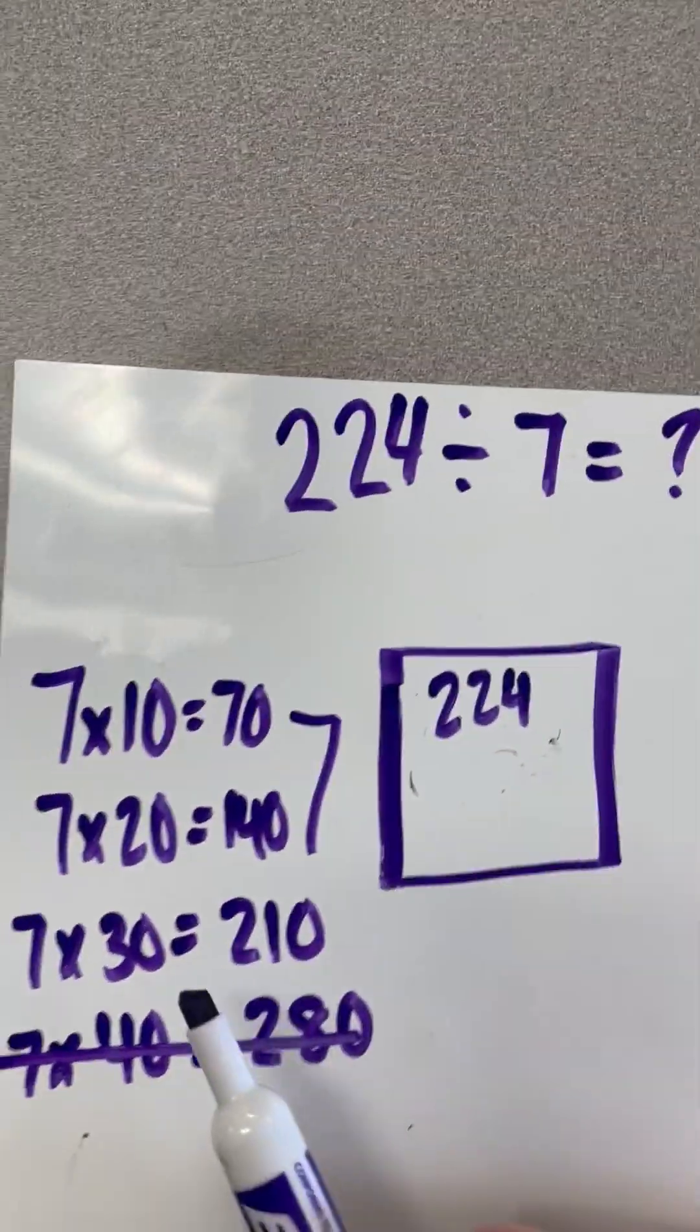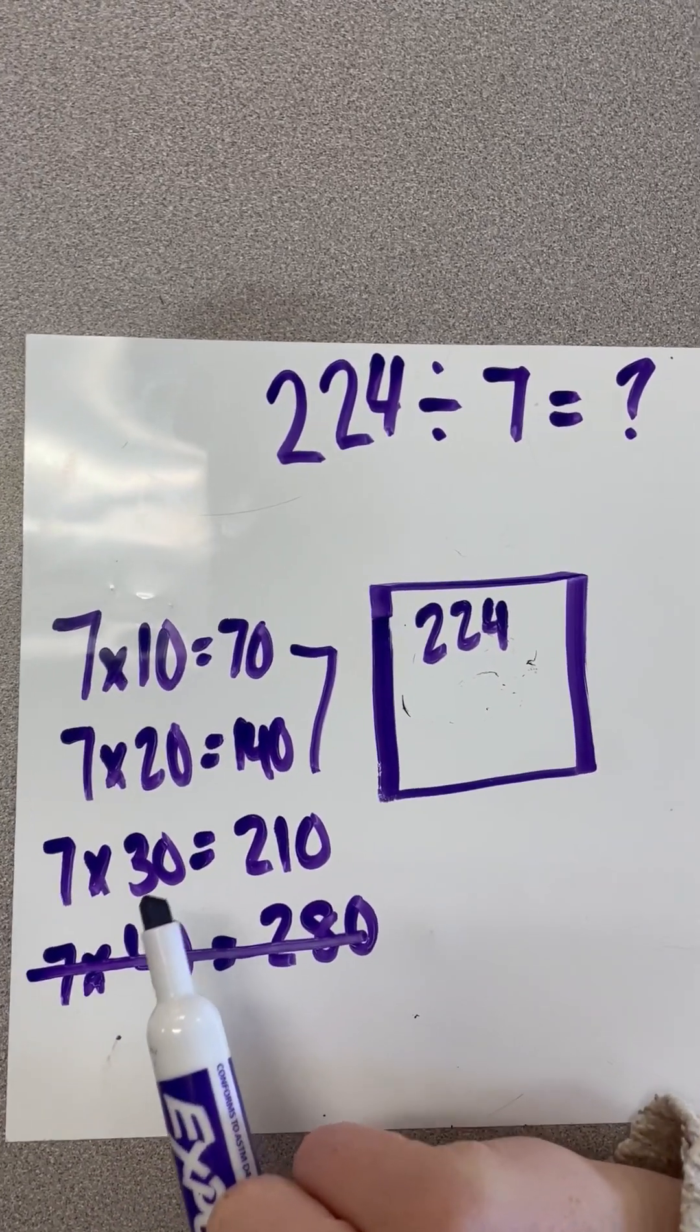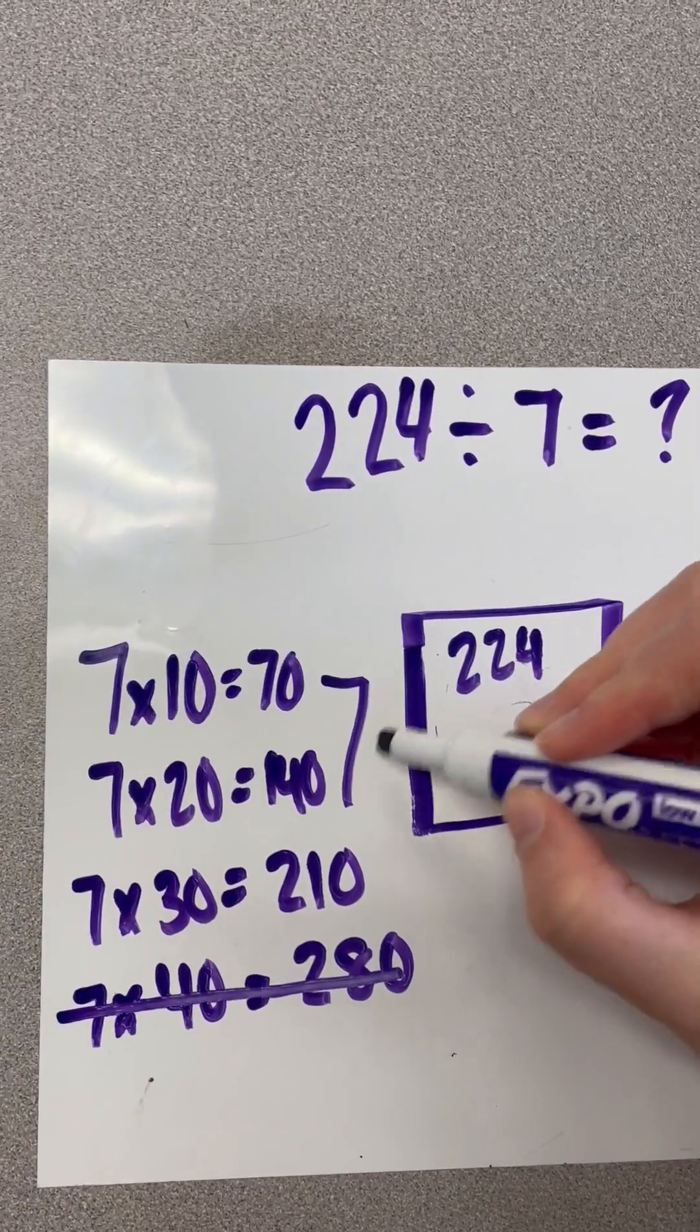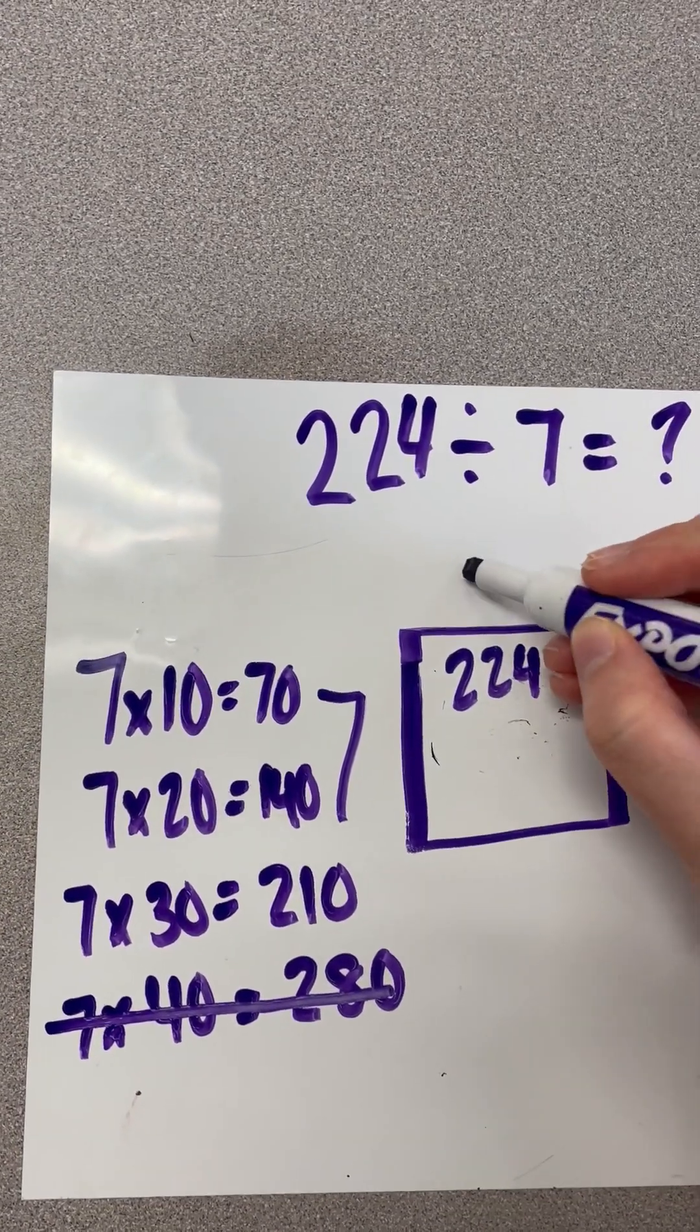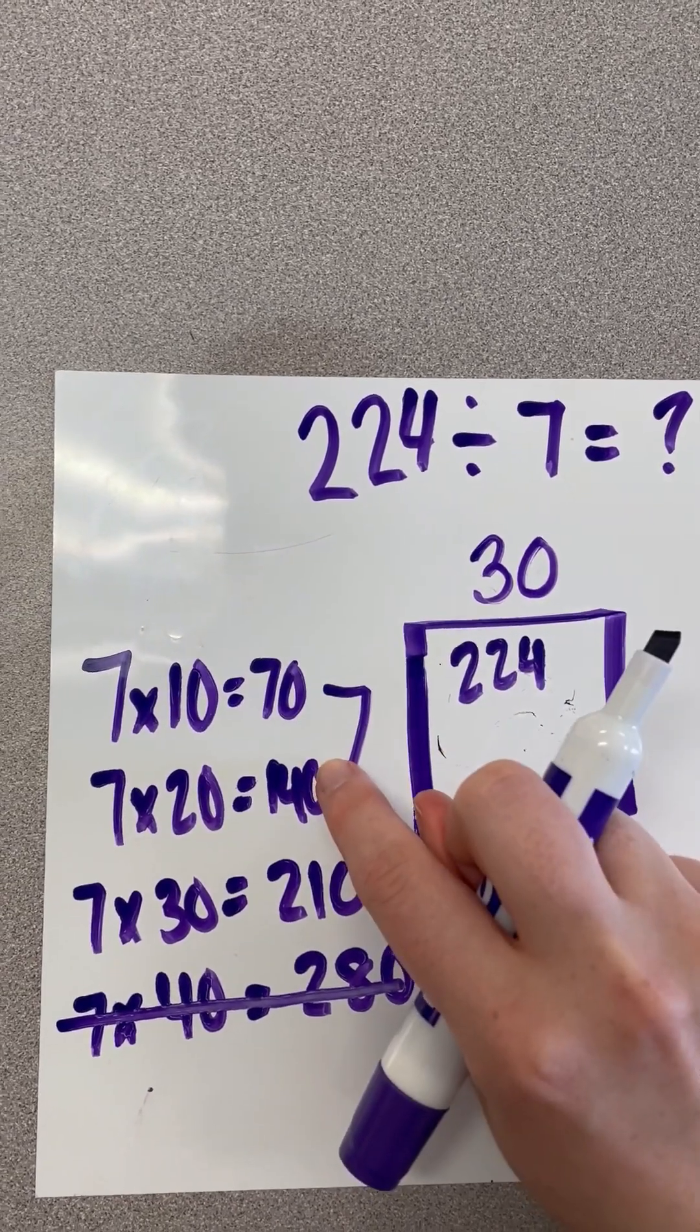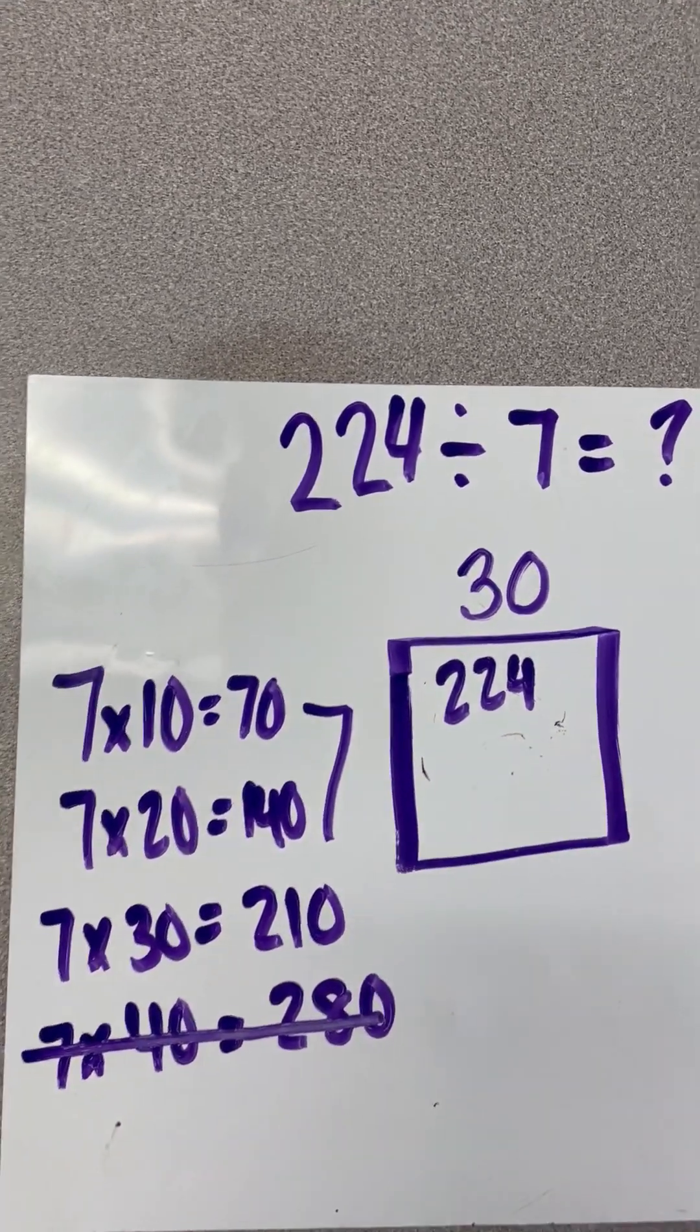So when I go back to my area model, that's a great place to start and will help us get a little bit closer to finding what our quotient is. When we want to use multiplication, we're going to put that number on top. And similar to multiplication, we're going to go 30 times 7 equals 210.